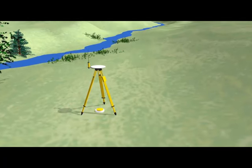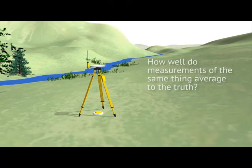However, just because something is repeatable does not make it accurate. Accuracy describes how well measurements of the same thing average to the truth. Consistently using an incorrect tripod height in a series of measurements may result in very precise but nonetheless inaccurate measurements.